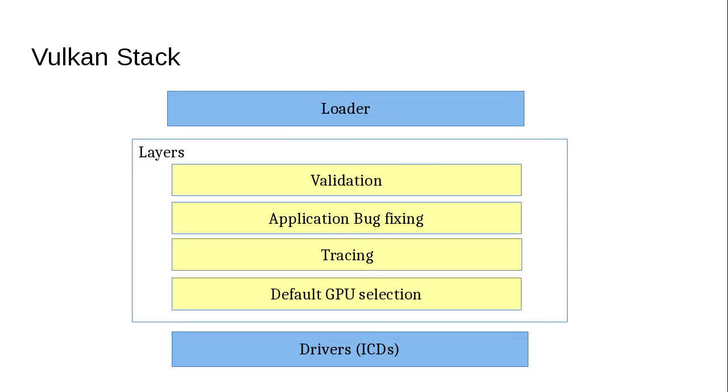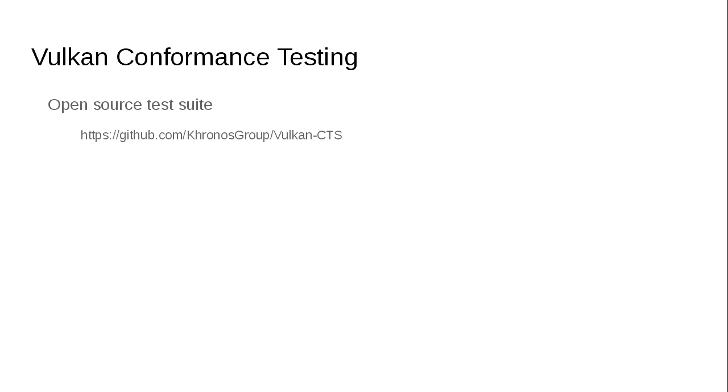One other important thing: how do you check conformance? Unlike OpenGL, where the conformance testing was all hidden inside Khronos and getting access to it was hard, Vulkan has open-sourced the conformance suite so you can access it and run it on your driver without jumping through hoops. All people should be contributing to the test suite instead of doing their own internal test suites. The idea is to get everyone working on one test suite to ensure consistent behavior across all hardware vendors.